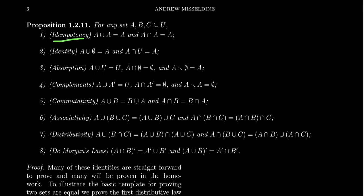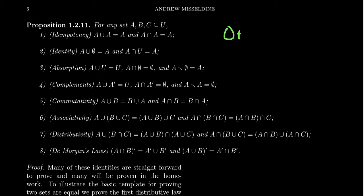The first property is referred to as the idempotency property. We say an element is idempotent when you operate on an element with itself and you get back that original element. For example, 0 plus 0 is 0, so 0 is an idempotent element with respect to addition. If you take 1 times 1, this equals 1, or 0 times 0 equals 0 — so 1 and 0 are both idempotent elements with respect to multiplication. Well, when it comes to unions and intersections, this is also true for sets: A union A equals A, and A intersect A equals A. This is the idempotency property.